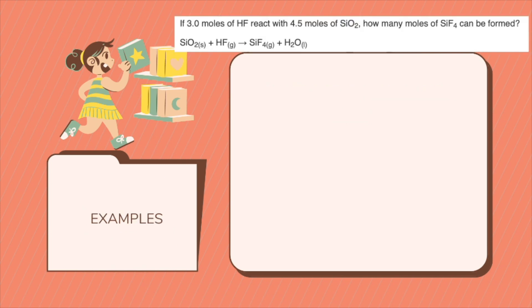Let's take a few examples on how to solve for the limiting reactant in a chemical equation. Solving limiting reactant problems involves stoichiometric skills. To solve for limiting and excess reactants, you will repeat the same stoichiometric steps using the same product in the chemical reaction for all reactants.